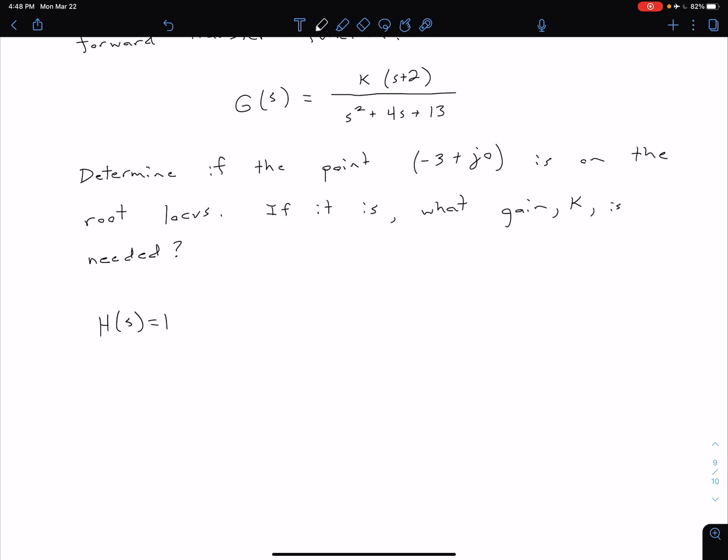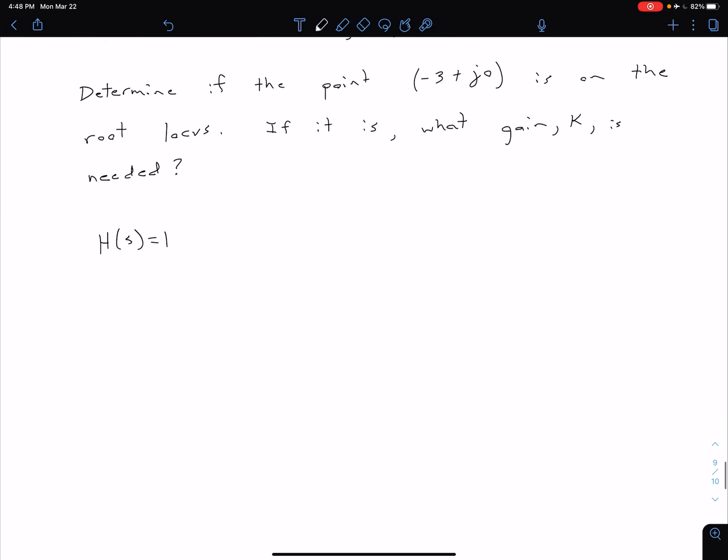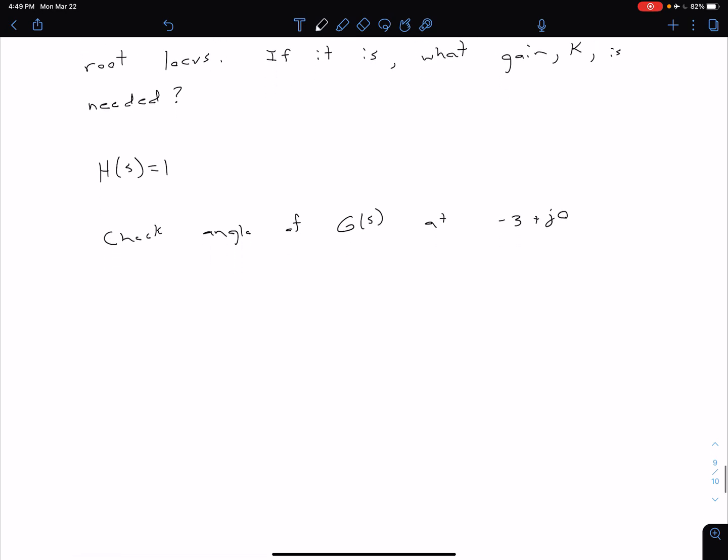What we need to check is the angle of G at the given point. Let's check the angle of G(s) at -3 + j0. Because K is a scalar value, it's not going to affect the phase angle, just the magnitude.